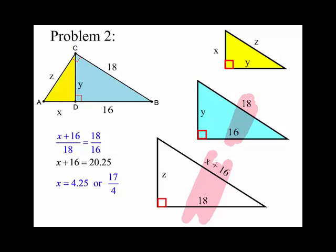I multiplied both sides by 18 to cancel out that denominator. And then 18 times 18 divided by 16 gives you 20.25. And then when you subtract 16 from both sides, you get either 4.25 or this fraction 17 over 4.